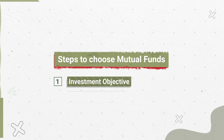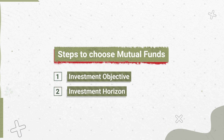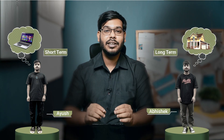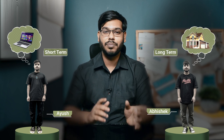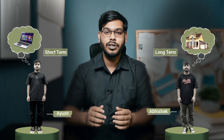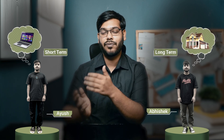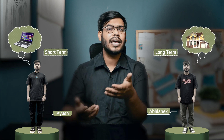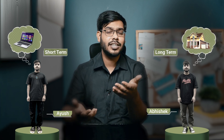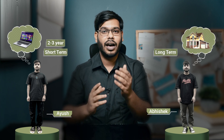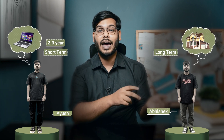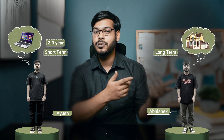The second parameter aligns with the first — it is the investment horizon. Since Ayush only wants to invest for a laptop, the time horizon he'll be investing for could be maybe two to three years. However, since Abhishek wants to buy a dream house, he would want to invest for greater than 10 years to achieve that goal.